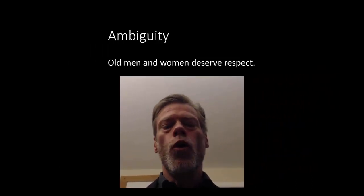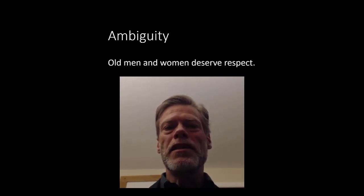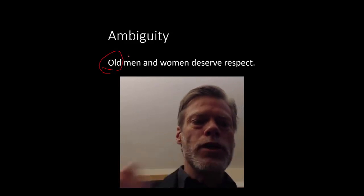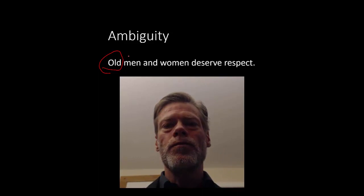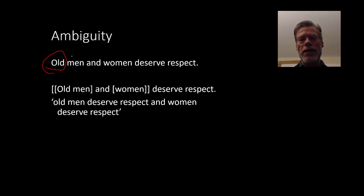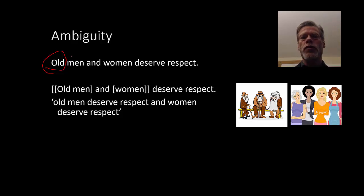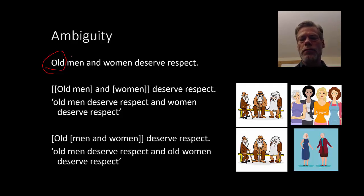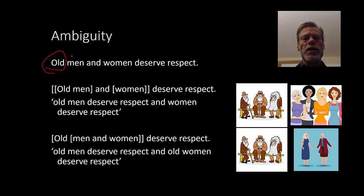Starting with this example: 'Old men and women deserve respect.' If you ponder this for a moment, you can see that the ambiguity lies in the word 'old.' The question is whether it applies to just men — old men and any women deserve respect — or whether it means old men and old women both deserve respect. It has to do with what the 'and' is combining: is it combining men and women, or old men with women? We use brackets as a way of grouping phrases together.